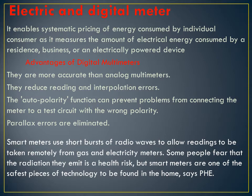The advantages of digital multimeters are that they are more accurate than analog multimeters. They reduce reading and interpolation errors. The auto polarity function can prevent problems from connecting the meter to a test circuit with the wrong polarity. Parallax errors are eliminated.